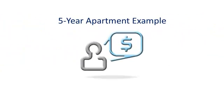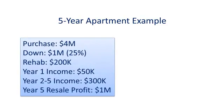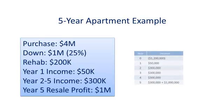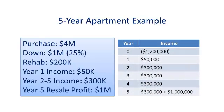Consider the following example where you invest 25% down, $1 million, plus an additional $200,000 in rehab costs on a $4 million apartment that yields only $50,000 cash flow in year one because the apartment is vacant most of the year due to the rehab. But it yields $300,000 in years two through five, plus a net profit on resale of $1 million due to appreciation and repositioning.